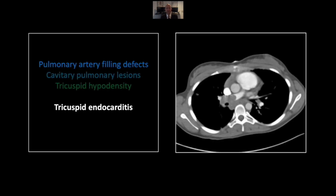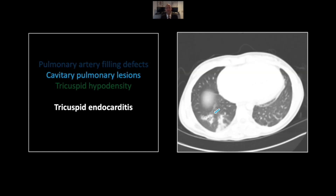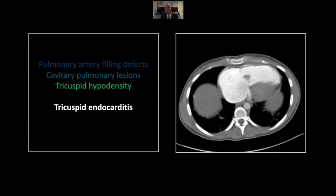Our next case is tricuspid endocarditis, with septic embolization and tricuspid valve insufficiency — two common complications of this pathology. You see here a large mass of vegetative matter occluding the right pulmonary artery, fairly unusual to see it to this degree. Downstream from that on lung windows you can appreciate small cavitary lesions and wedge-shaped peripheral parenchymal densities, highly suggestive of pulmonary infarctions. On the soft tissue windows you can actually appreciate a tricuspid vegetation. Note also there is right atrial enlargement and hepatic venous backflow, both suggestive of tricuspid insufficiency.